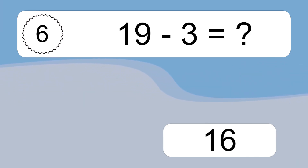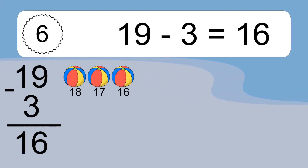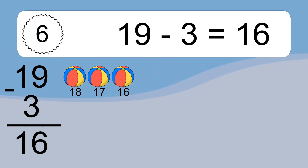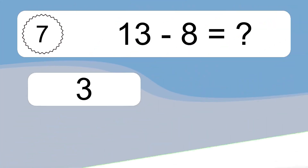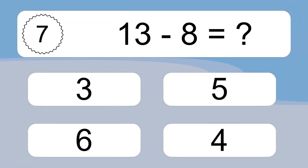19 minus 3 equals 16. Let's count it. 18, 17, 16. 13 minus 8 equals what?